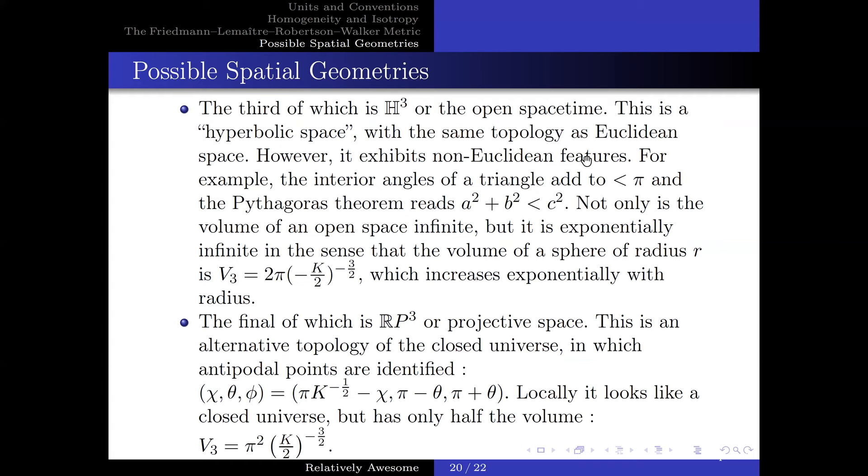The third kind of universe is H³, known as the open universe. This is known as the hyperbolic universe, with the same topology as Euclidean space. However, it exhibits non-Euclidean features. For example, the interior angles of a triangle add to less than π, and the Pythagorean theorem is a² + b² is less than c². Not only is the volume of an open space infinite, but it's exponentially infinite, in the sense that the volume of a sphere of radius r is the following, which increases exponentially with the radius.